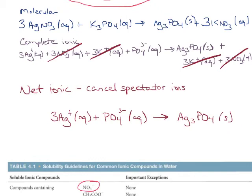To summarize: in order to write your net ionic equation, it's easiest to first write the full molecular equation, then write the complete ionic equation, then cancel out the spectator ions to arrive at the net ionic equation.